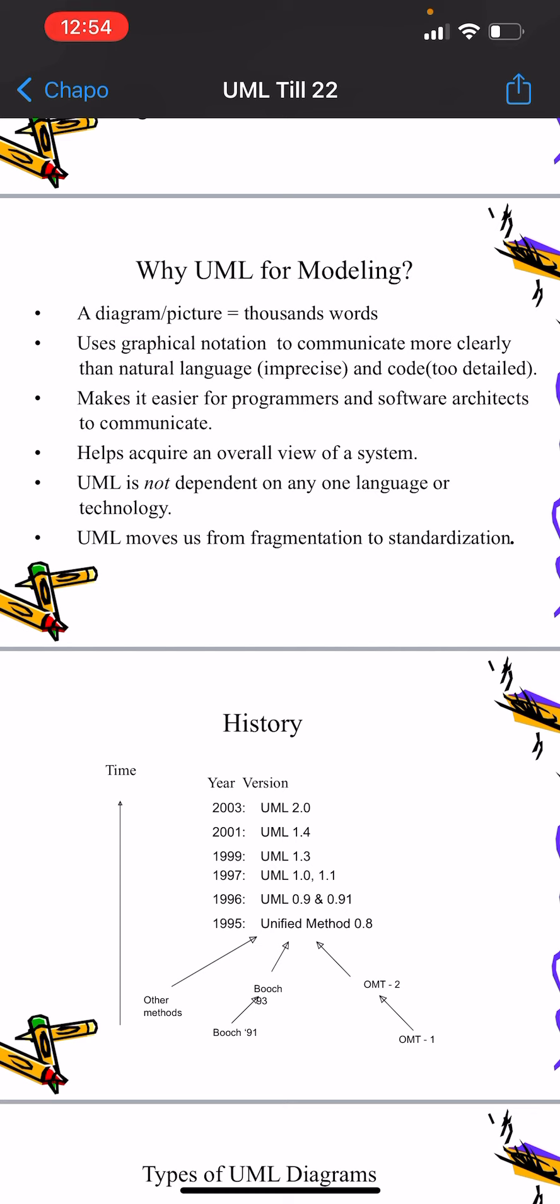UML is not dependent on any language or technology. It's language and technology independent. You can incorporate it in software project development and business processes, showing how the organization works and the workflow. UML moves from fragmentation to standardization, where small fragments and components come together, so overall you work on the system. These are the reasons why we need UML and how we use UML modeling for programming, designing, or software development.